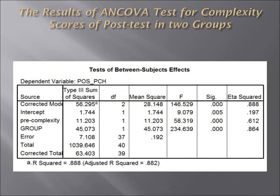The ANCOVA test for complexity scores of the post-test in two groups showed F equal to 234.63 and P equal to 0.0. The difference between the adjusted means in the post-test of the two groups is significant, and the magnitude of this effect is high. Eta squared is equal to 86.4%, showing the positive effect of model essays on developing the complexity of EFL learners.